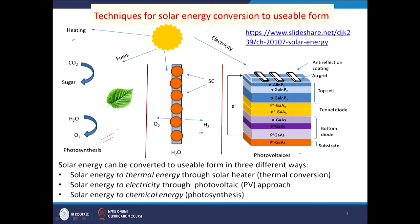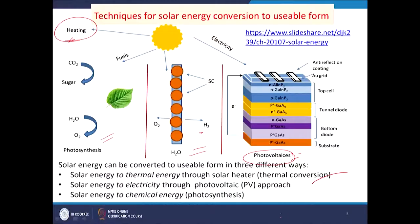There are a number of ways or routes through which solar energy can be converted to usable form. Hydrogen production through photolysis is a very complex process and its simulation is still under development. Photovoltaics and the thermal route are already developed, and we will concentrate on these two routes for electricity production.